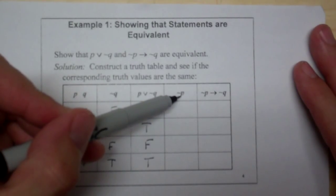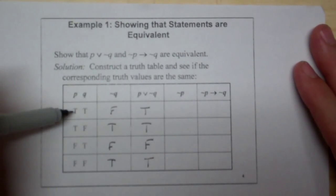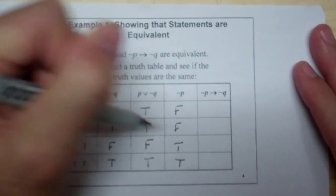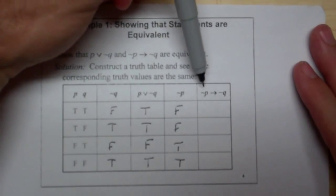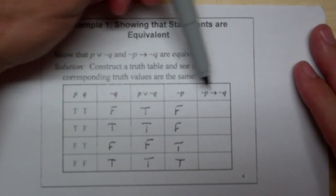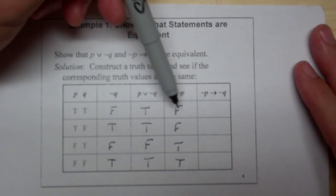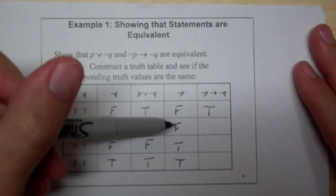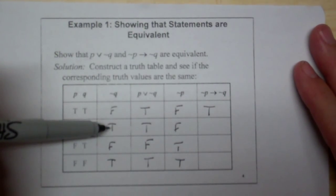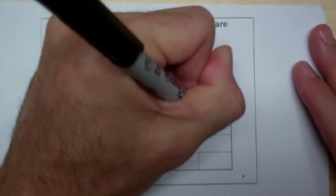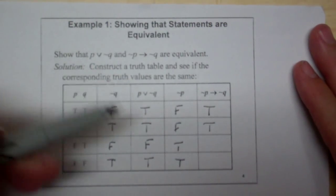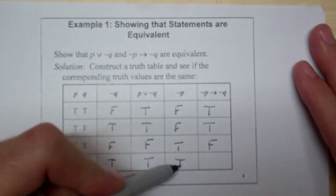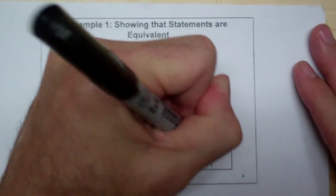Now we need ¬P. Since P is T, T, F, F, ¬P becomes F, F, T, T. So how does ¬P→¬Q work? False implies false is true. False implies true is also true — that was the weird one. True implies false is false, and true implies true is true.